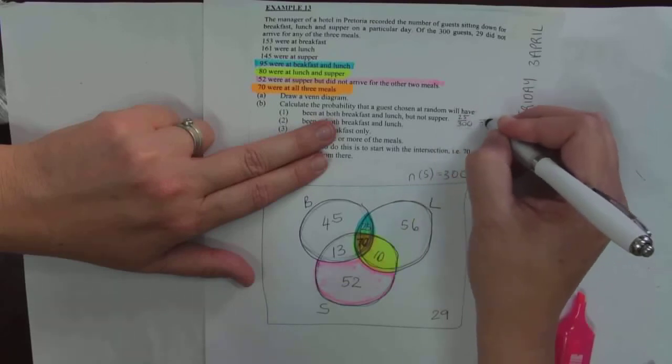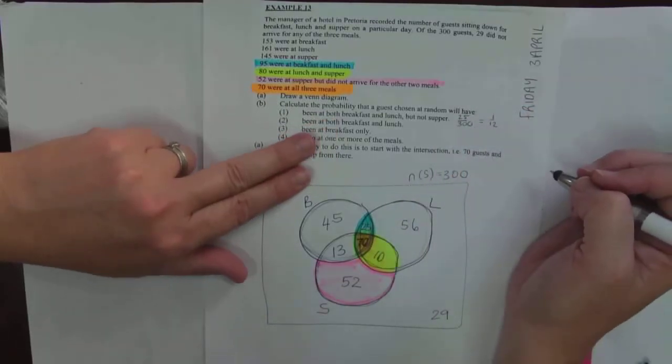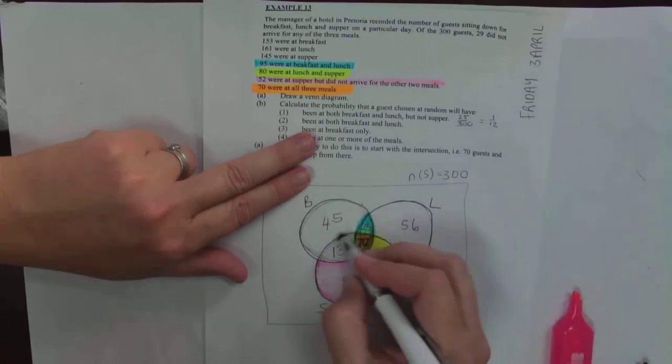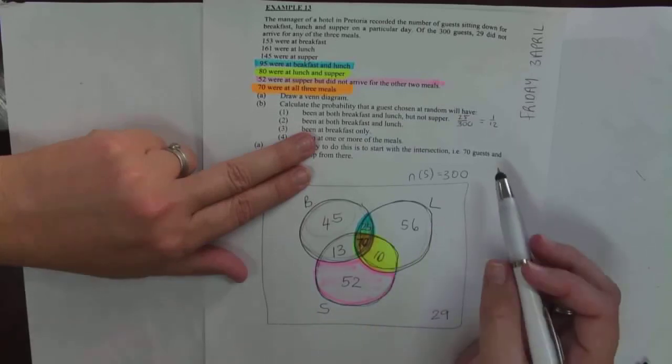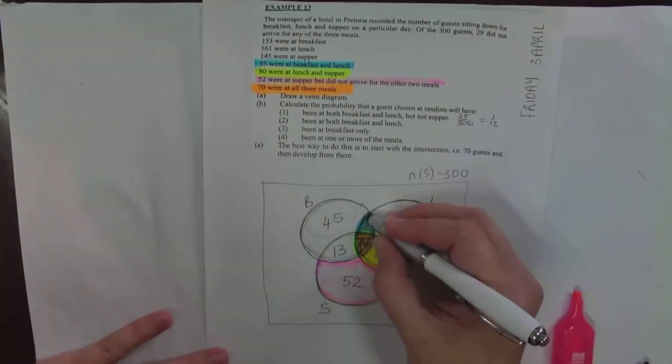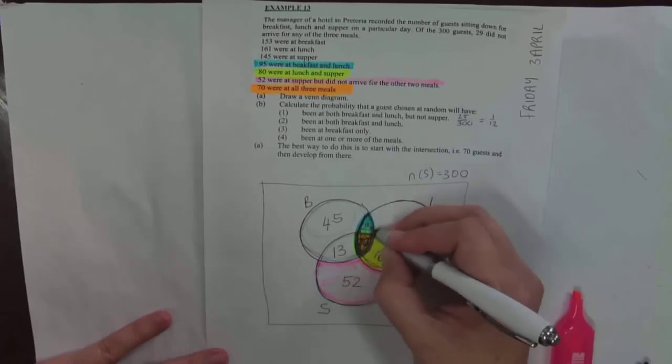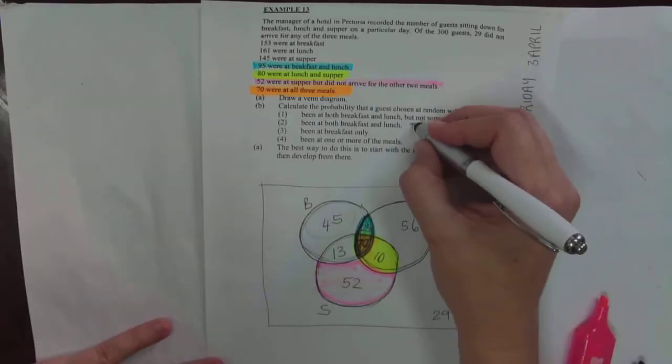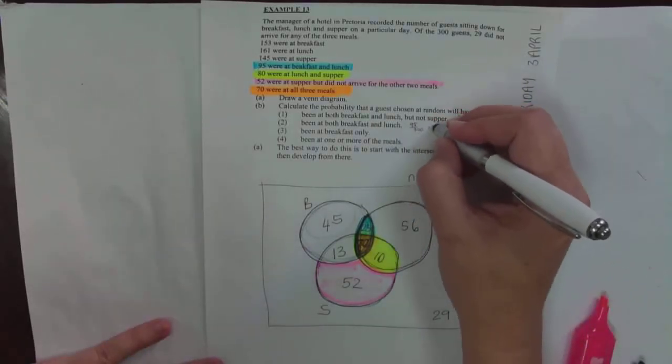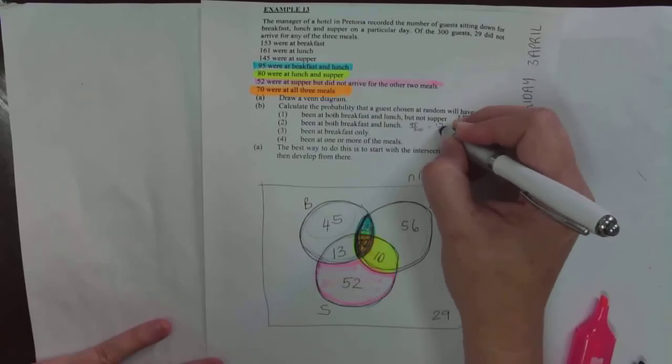They've been at both breakfast and lunch—both breakfast and lunch. Breakfast and lunch is 95 over 300, that's 19 over 60.